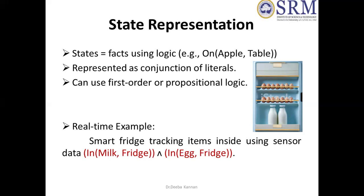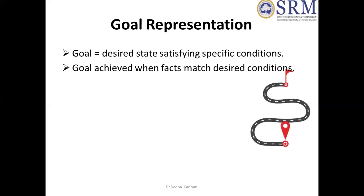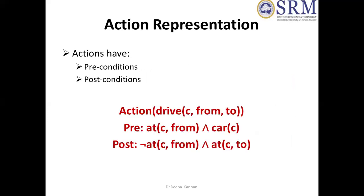We can use first-order logic and propositional logic to represent this state. The goal is the final destination — we can reach what we aim for. For example, if we have a delivery robot or an automated car, we can reach the destination with minimum cost. This is the goal. The action representation is also very important. If we do an action formally, we can use first-order logic, predicate logic, or propositional logic.